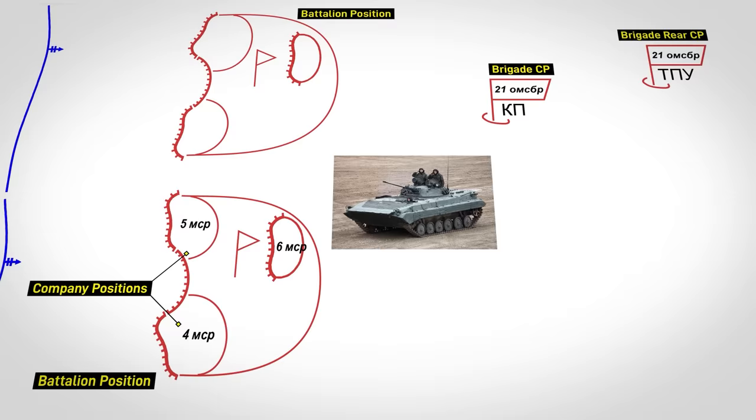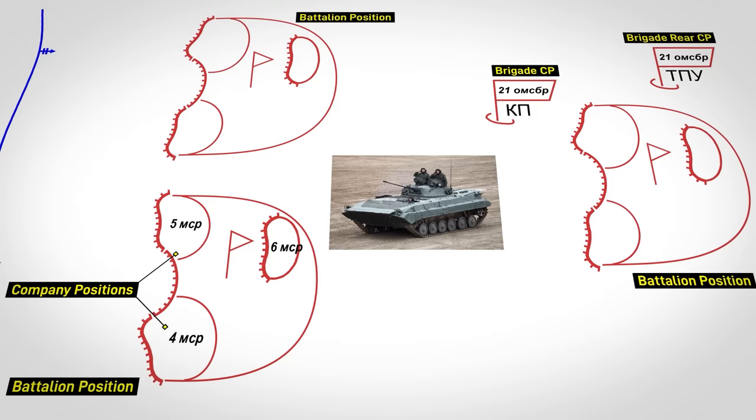To put this all into context, let's look at a hypothetical brigade fighting position, arrayed with two BMP-mounted motor rifle battalions forward, one motor rifle battalion in the second echelon, and tank companies attached to each.